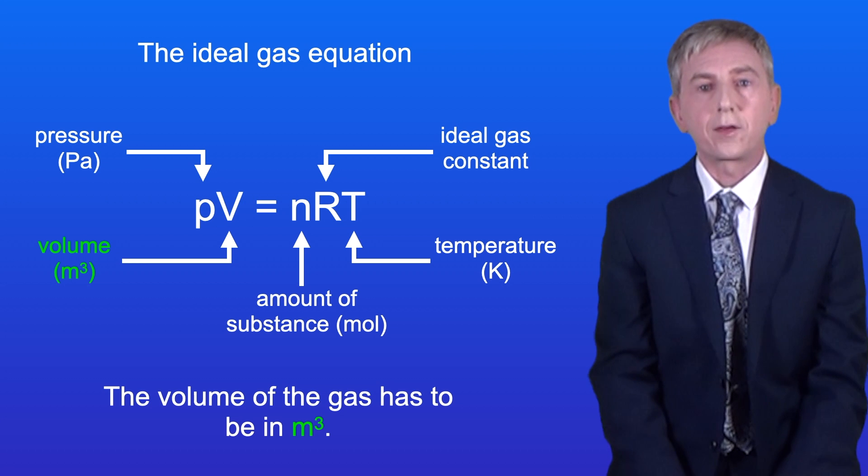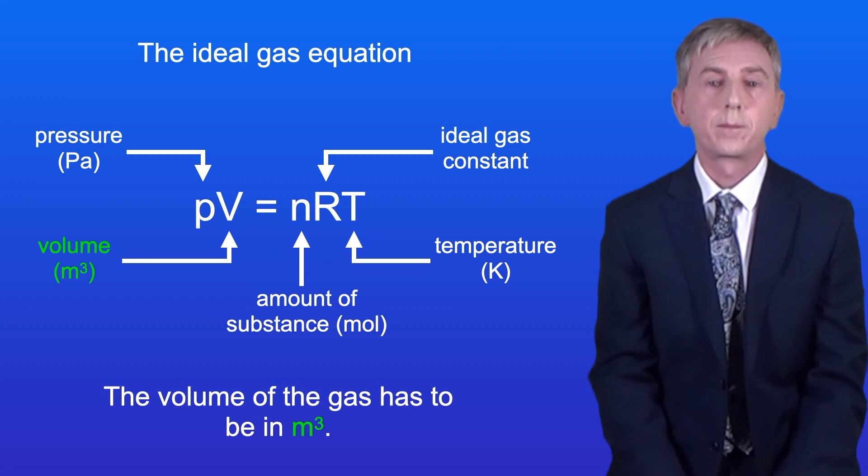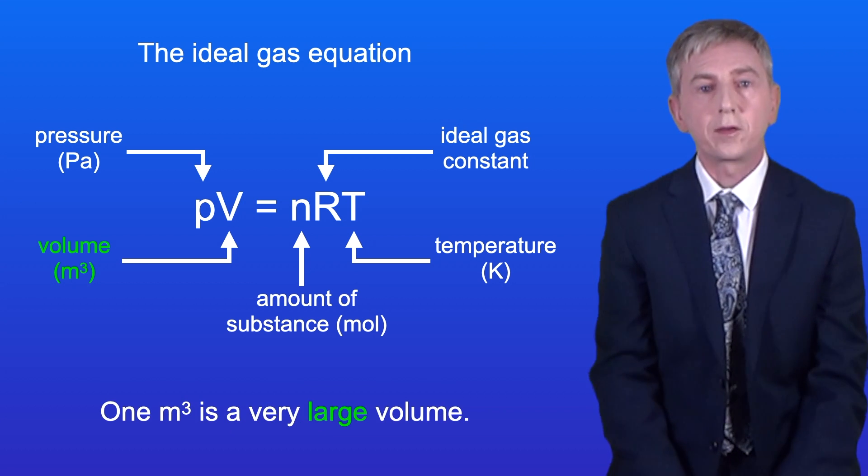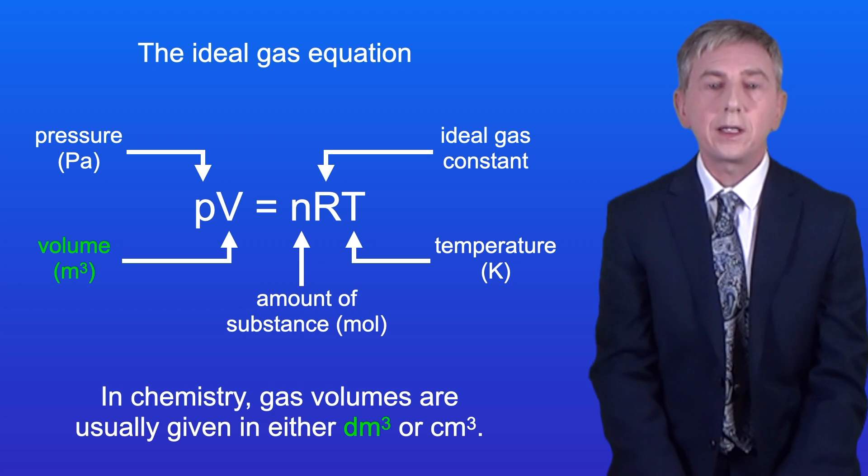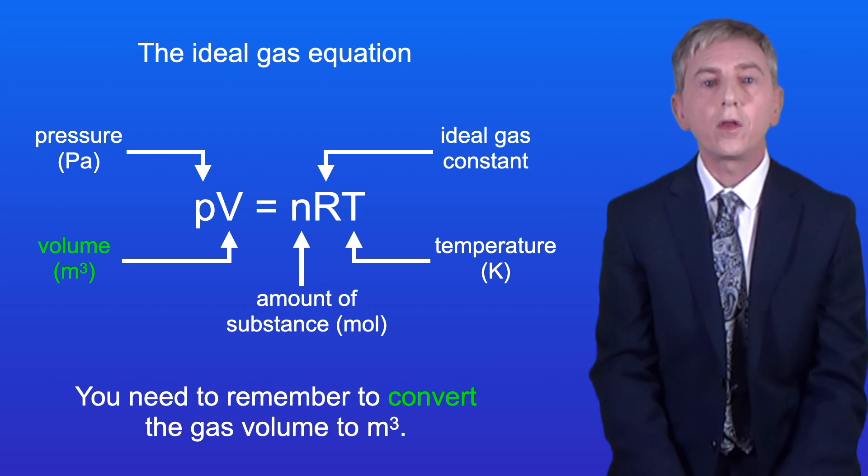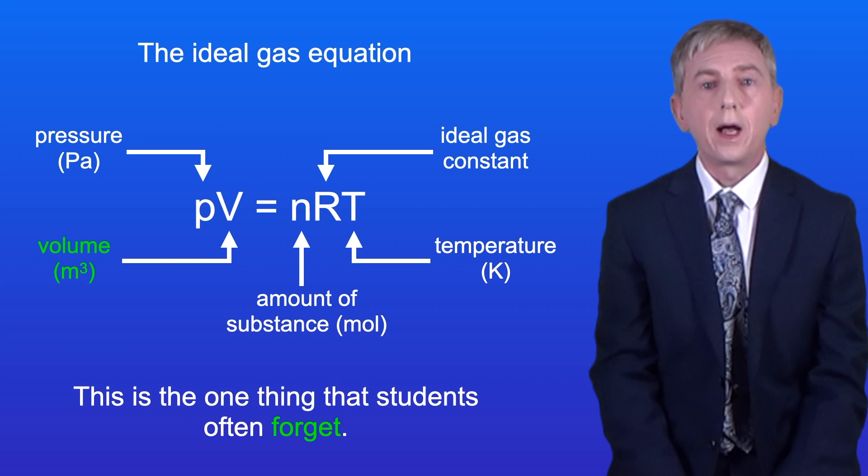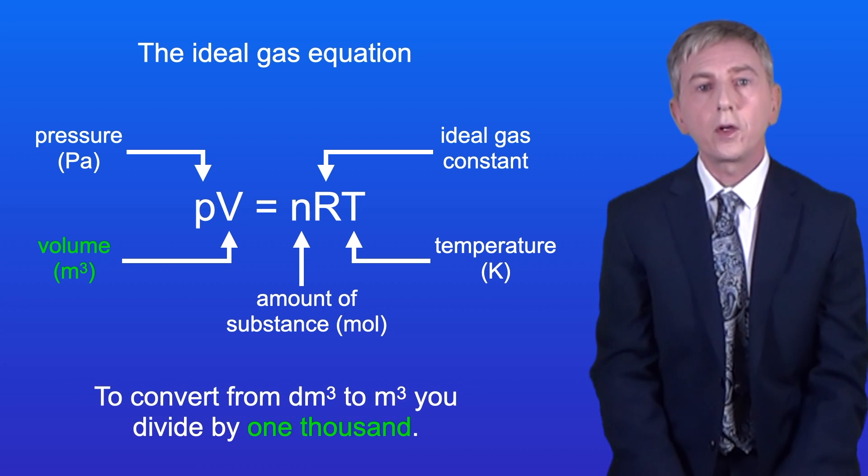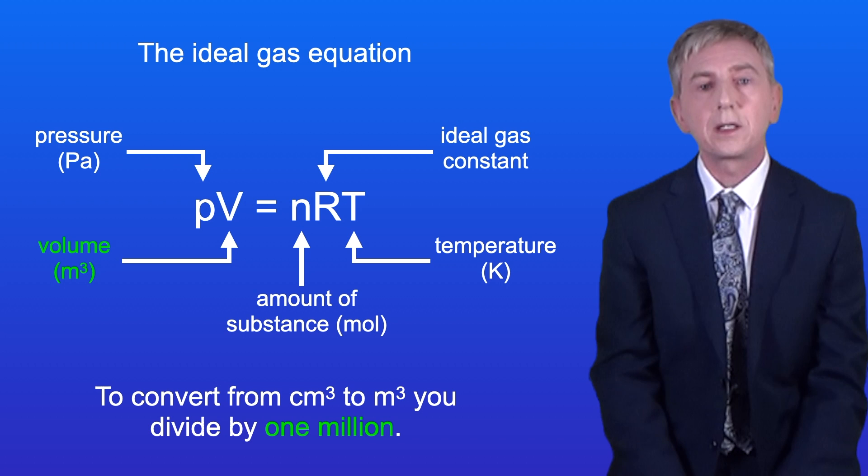The volume of the gas has to be in meters cubed. Now one meter cubed is a very large volume, so in chemistry gas volumes are usually given in either decimeters cubed or centimeters cubed. So you need to remember to convert the gas volume to meters cubed, and this is the one thing that students often forget. To convert from decimeters cubed to meters cubed, you divide by 1000. And to convert from centimeters cubed to meters cubed, you divide by 1 million.